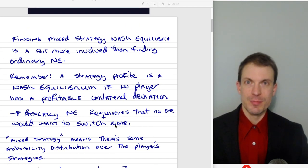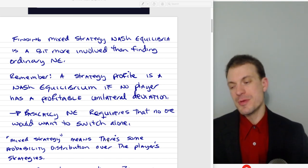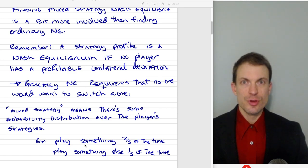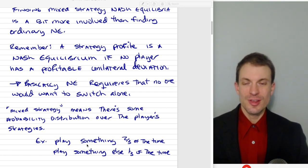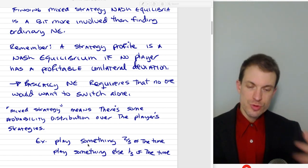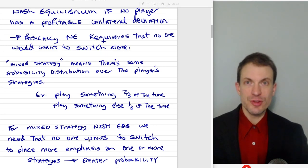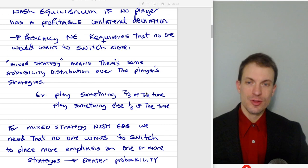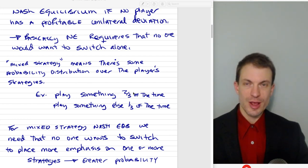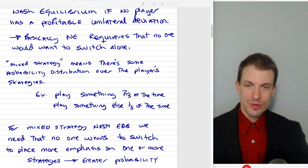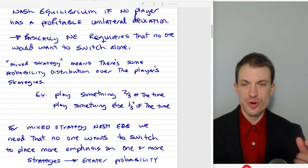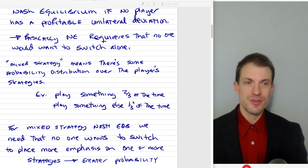Mixed strategy is going to add another layer of complexity in that now we're going to assume there's some probability distribution, some mixture over the strategies that a player's got. So for instance, maybe a player would play something two-thirds of the time and something else one-third of the time. For a mixed strategy Nash Equilibrium, it's going to be the case that no one wants to switch, meaning nobody wants to place greater emphasis on one or more strategies. It would have to be the case that the two-thirds and one-third is keeping the other player indifferent between their strategies.